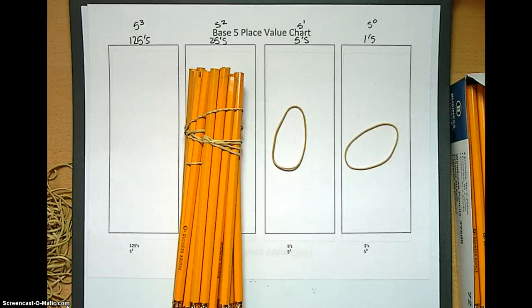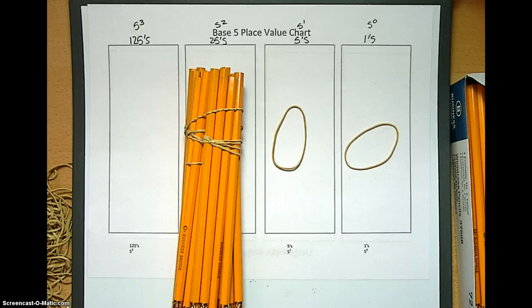That's the place value we're in. So that's a 1, 0, 0 base 5. We have 1 bundle of 25, 0 bundles of 5, and 0 singles.